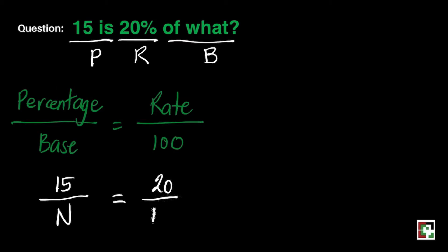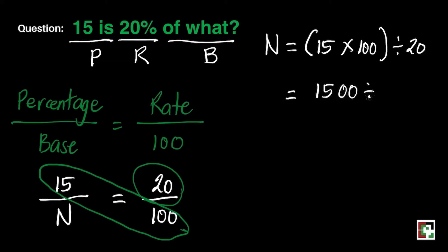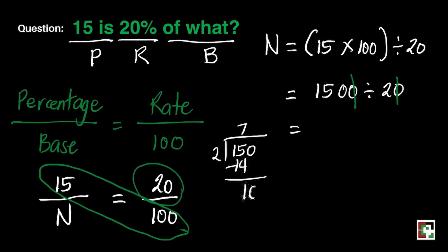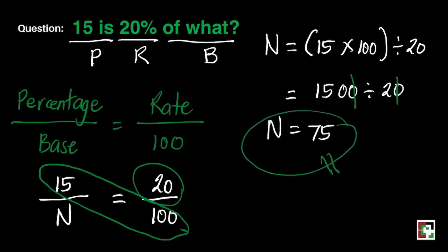Now we will just substitute. That's going to be 15 over N is equal to 20 over 100. To get the value of N, we do cross multiplication: 15 times 100 divided by 20. 15 times 100 is 1,500; 1,500 divided by 20 — we can cancel the two zeros and divide 150 by 2 — gives us 75. So N equals 75, meaning 15 is 20% of 75.